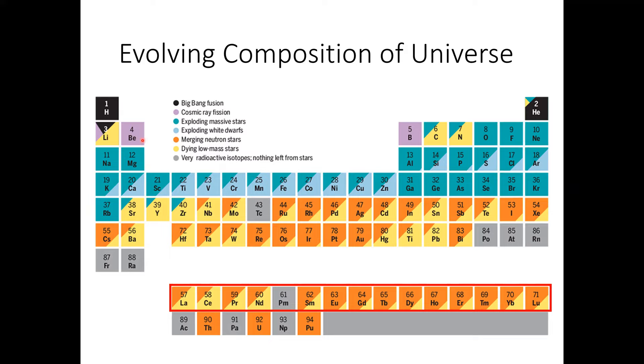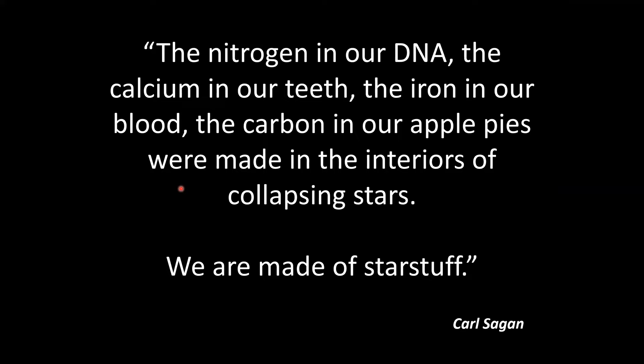That's where the elements come from. As Carl Sagan famously said: 'The nitrogen in our DNA, the calcium in our teeth, the iron in our blood, the carbon in our apple pies were made in the interiors of collapsing stars. We are made of star stuff.' I find that such a beautiful image and such a fascinating topic. Thank you very much.